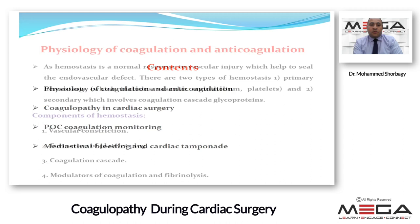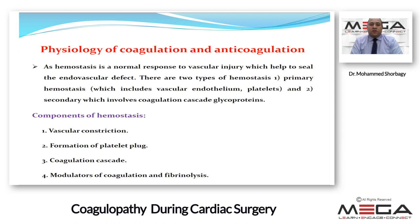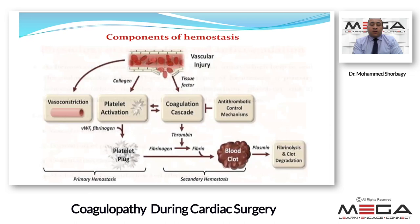As discussed earlier about physiology of coagulation and anticoagulation: primary hemostasis involves vascular endothelium and platelets; secondary hemostasis involves the coagulation cascade and glycoproteins. Components of hemostasis include vascular constriction, formation of platelet plug, coagulation cascade, and then modulators of coagulation and fibrinolysis.